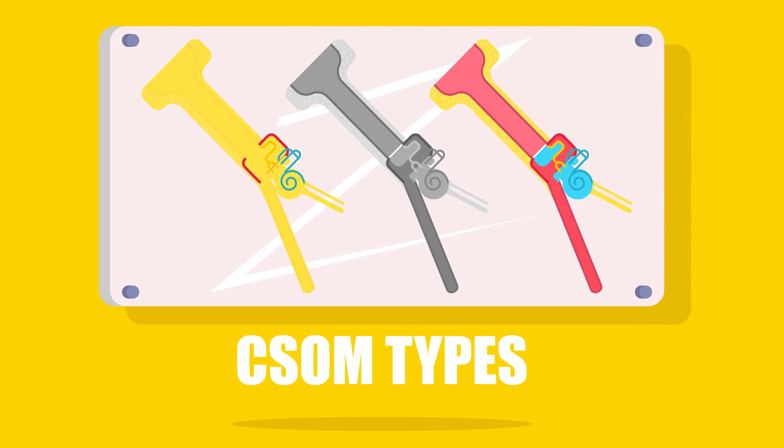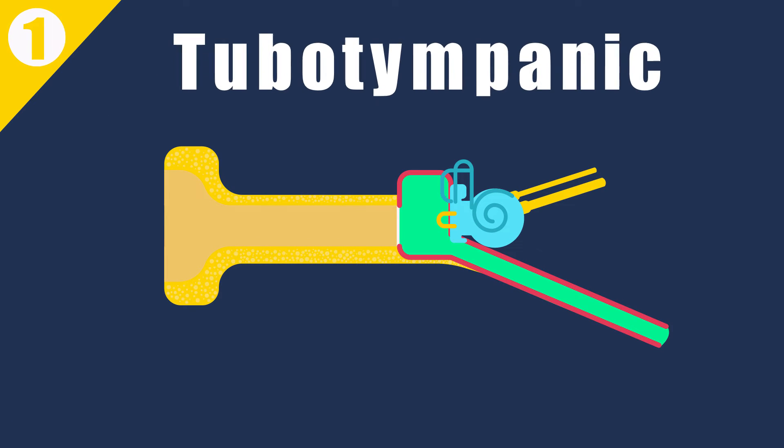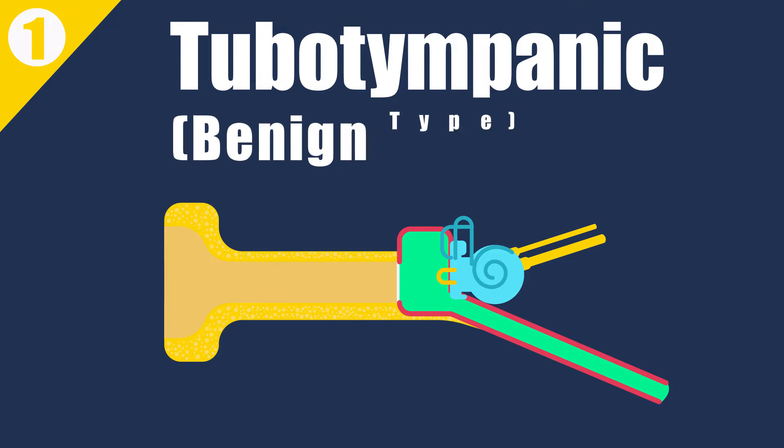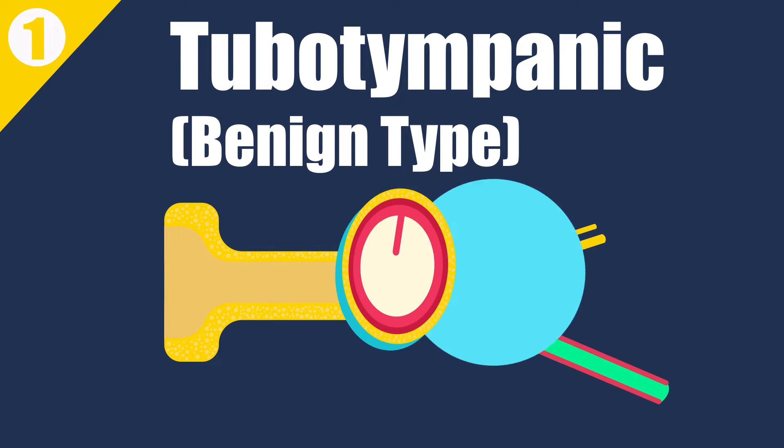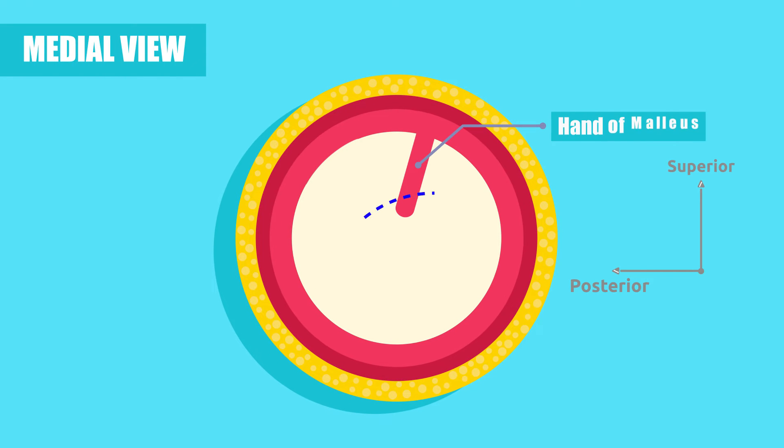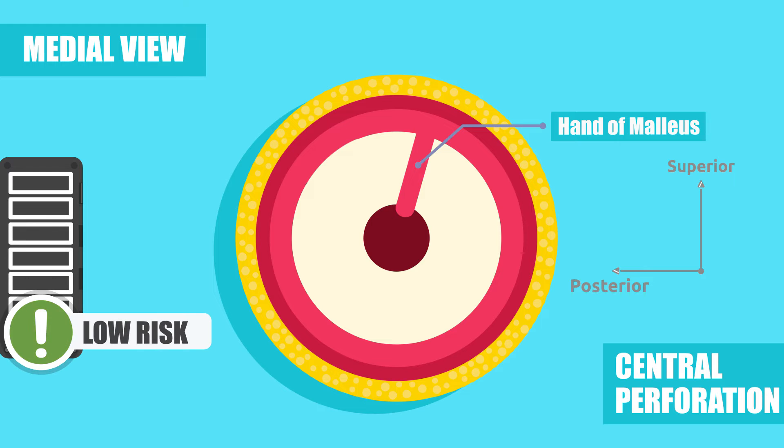Clinically, CSOM is divided into two types. Tubotympanic, also called the safe or benign type, involves anteroinferior part of middle ear cleft and is associated with a central perforation. There is little risk of serious complications.